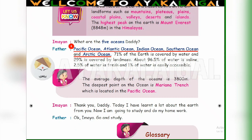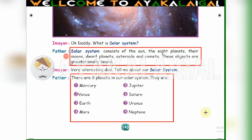Next, 5th roman — answer in detail. First question: Write about the solar system. Page number 143. Solar system consists of the sun, the 8 planets, their moons, dwarf planets, asteroids and comets. These objects are gravitationally bound. There are 8 planets in our solar system. They are Mercury, Venus, Earth, Mars, Jupiter, Saturn, Uranus, and Neptune.